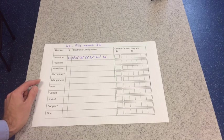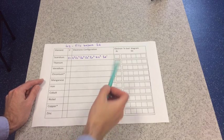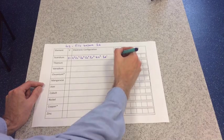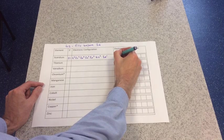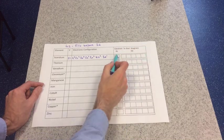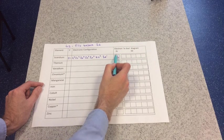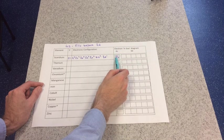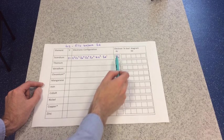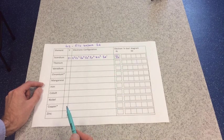And the other way we can represent electronic configurations is known as the electron in box diagram. And so we represent the electrons as arrows. So remember, this is the 4s orbital here. So there's one electron, and there's the other electron. The arrows indicate the spin, so opposite spins in an orbital.